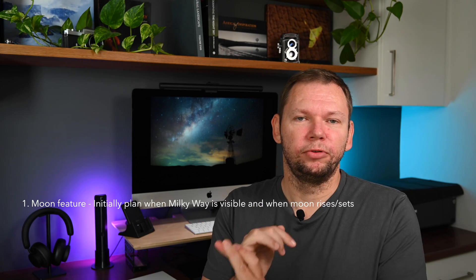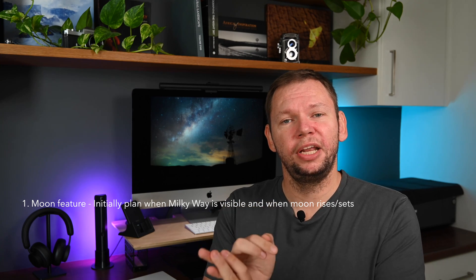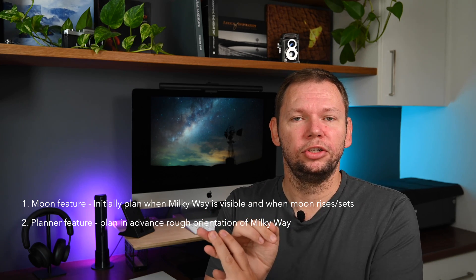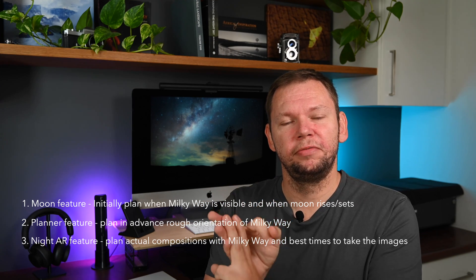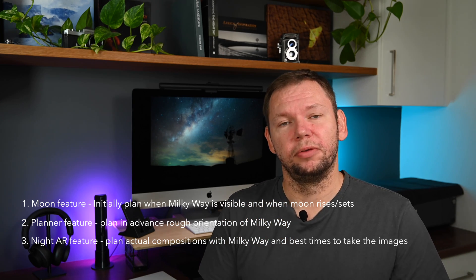You can plan throughout the night — what to shoot at 9 p.m., 10 p.m., 11 p.m., 1 a.m., 2 a.m., 3 a.m. — and get five or six good compositions with the Milky Way in different orientations, from rising off the horizon to ending with a panorama. So the workflow is: use the Moon section for initial planning of when the Milky Way rises and sets, then the Planner to plan in advance before you arrive, then Night AR on location to nail specific times and compositions. I hope you found that useful for planning with the PhotoPills app.